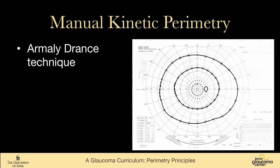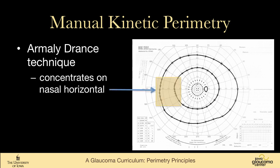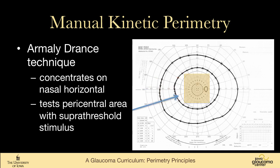Manual kinetic perimetry is typically done with the Armaly-Drance technique. This technique concentrates on the nasal horizontal because of the horizontal raphe and the tendency of glaucoma defects to show up nasally more than elsewhere in the field. It also does supra-threshold testing within the central 20 degrees, meaning they take a target visible in the periphery and test throughout this area to make sure there are no scotomas.